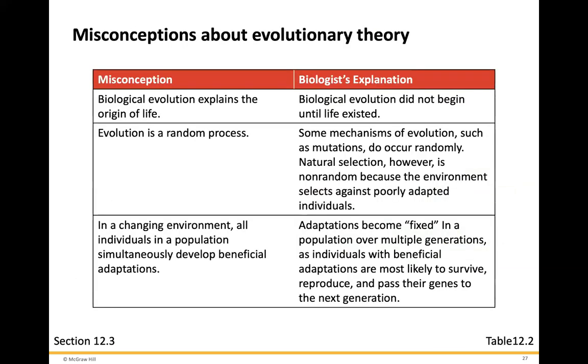Now let's look at some misconceptions about evolutionary theory. First misconception: biological evolution explains the origins of life. In fact, biological evolution did not begin until life existed. Second misconception: evolution is a random process. Some mechanisms of evolution, such as mutations, do occur randomly; however, natural selection is non-random because the environment selects against poorly adapted individuals. Third misconception: in a changing environment, all individuals in a population simultaneously develop beneficial adaptations. Adaptations become fixed in a population over multiple generations as individuals with beneficial adaptations are most likely to survive, reproduce, and pass their genes to the next generation.